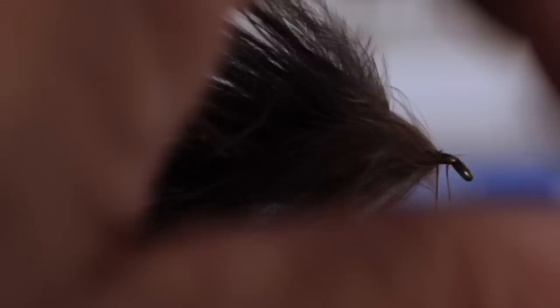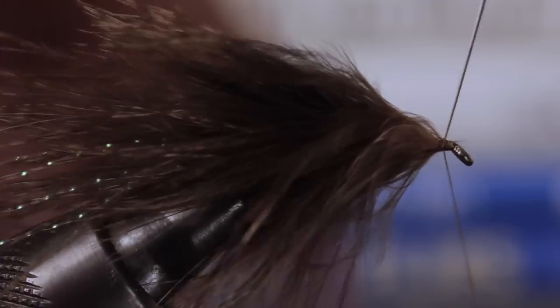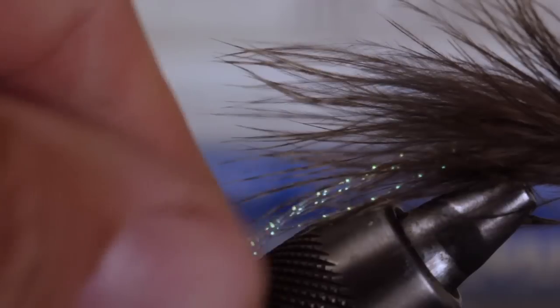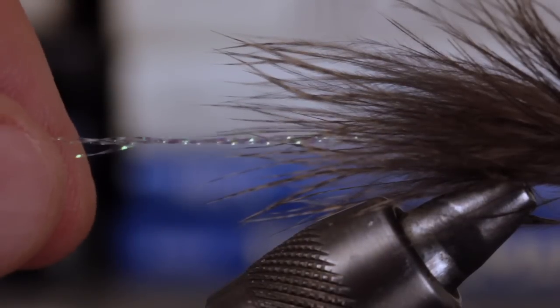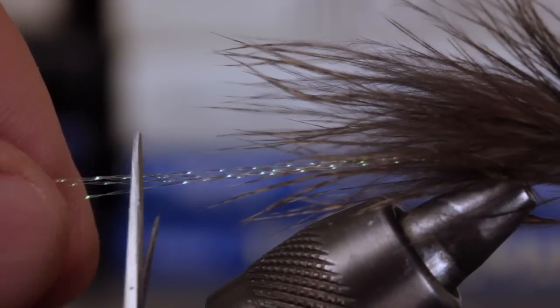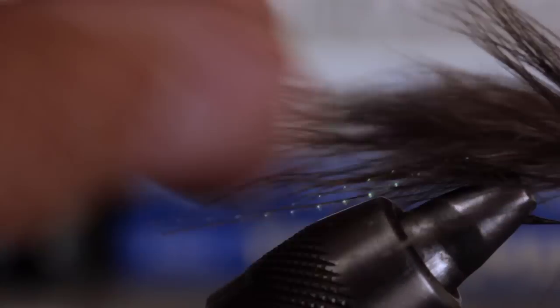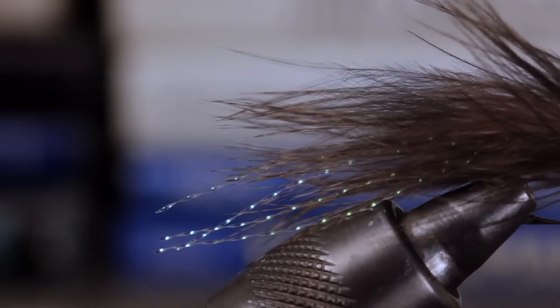Now we're going to repeat the feather prep, tie-in, and wrapping procedure several more times to fill all but the last little bit of the hook shank. At some time during the process, you can also pull the crystal flash tail straight back and snip it off leaving about a quarter of an inch extending beyond the tips of the chickabou fibers.